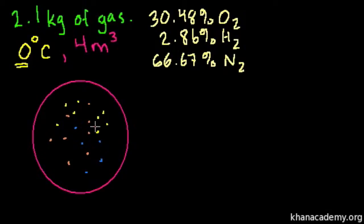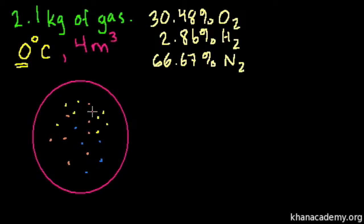We have a situation where we have a 4-meter cubed container — let's say that's a balloon of some sort. And instead of having just one type of molecule of gas in this container, we have three molecules of gas: some oxygen molecule, some hydrogen molecule, and some nitrogen molecule.